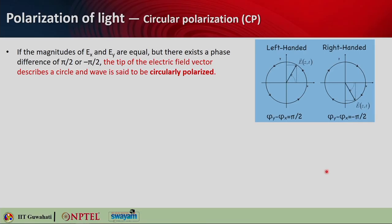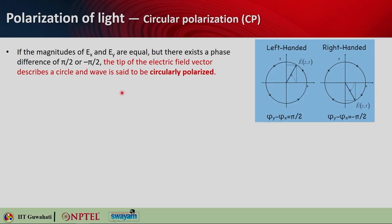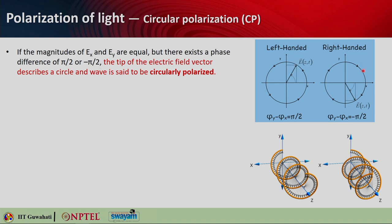Now let us look into more details of circular polarization. E_x and E_y are equal — these are two plane waves of equal magnitude or amplitude with a phase difference of π/2 (90 degrees). The phase difference can be +π/2 or −π/2, and that decides whether it is left-handed or right-handed circular polarization. If φ_y minus φ_x equals π/2, the electric field vector goes in the counterclockwise direction — you stand here looking at the screen and see the wave going counterclockwise as it comes towards you.